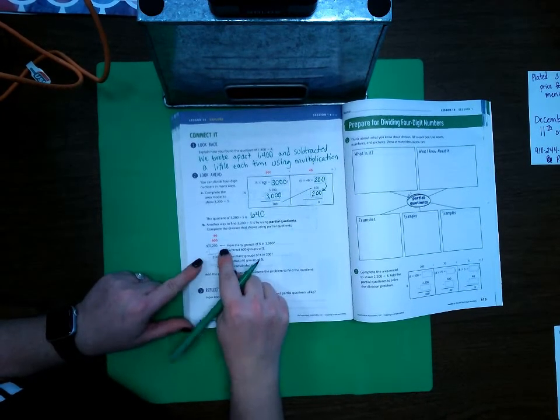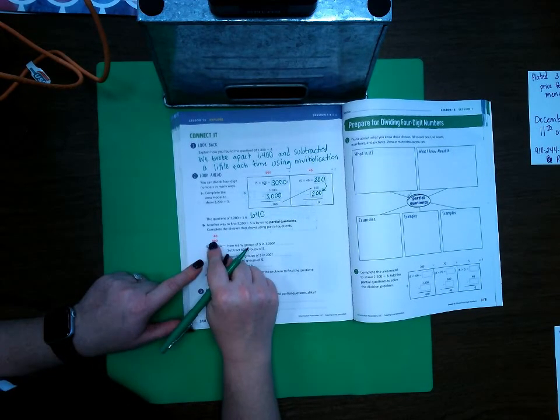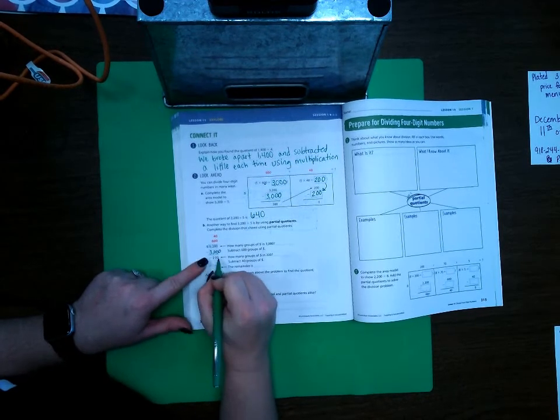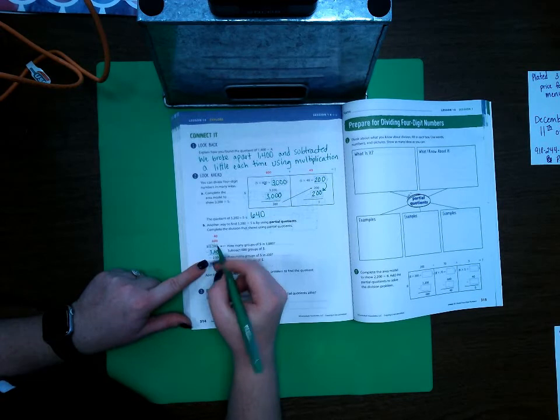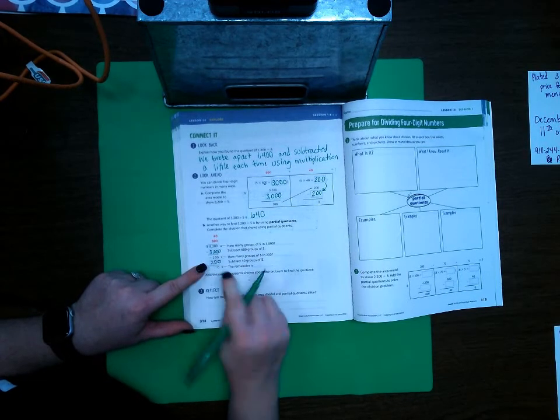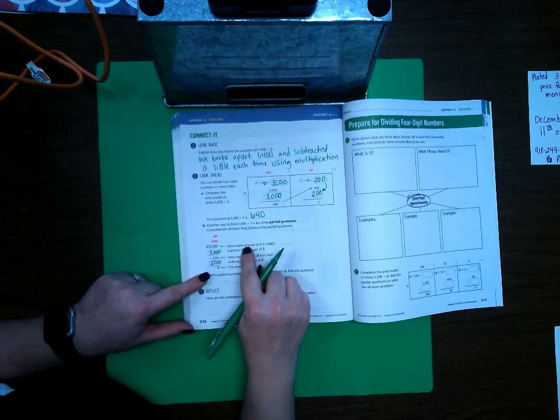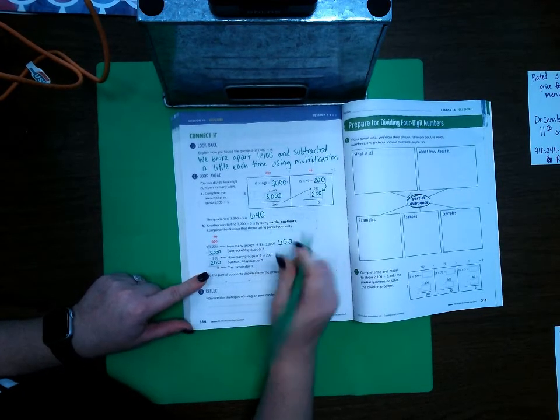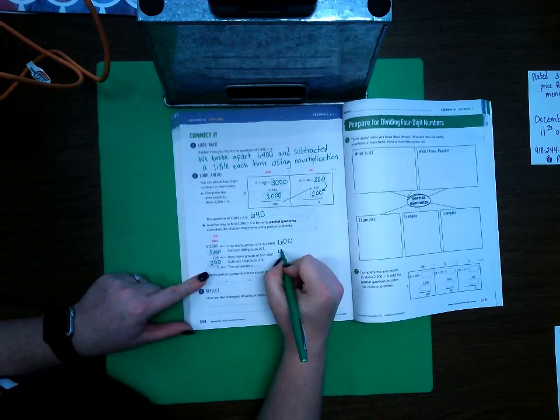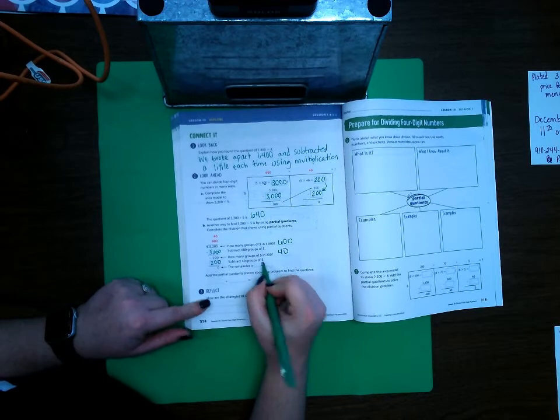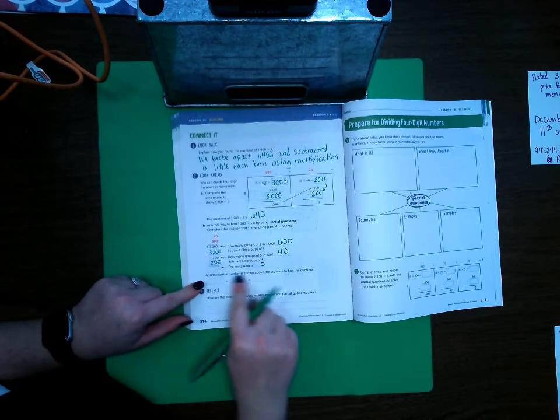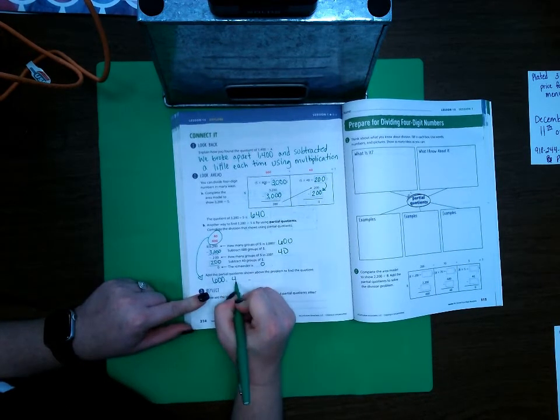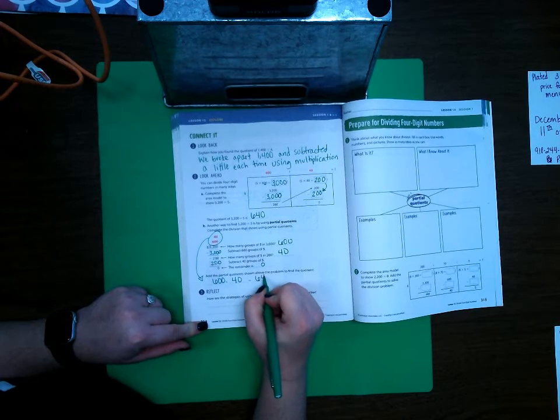Here's another way to do it. We can do it like this, where we do five times 600 is 3000, which leaves 200 left over. Five times 40 is 200, which leaves zero left over. So, how many groups of five are in 3000? 600 of them. How many groups of five are in 200? 40 of them. And then the remainder is zero. And then right here is where we add these together. So, it's 600 plus 40 equals 640.